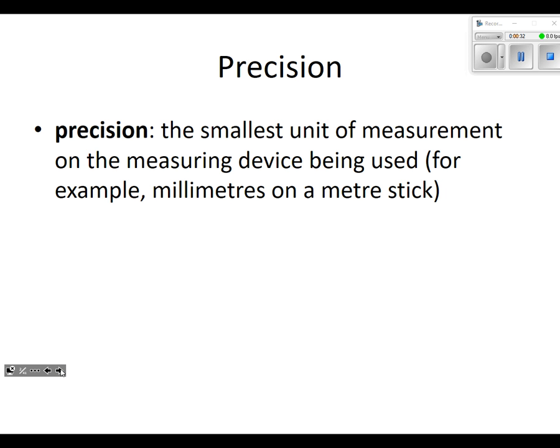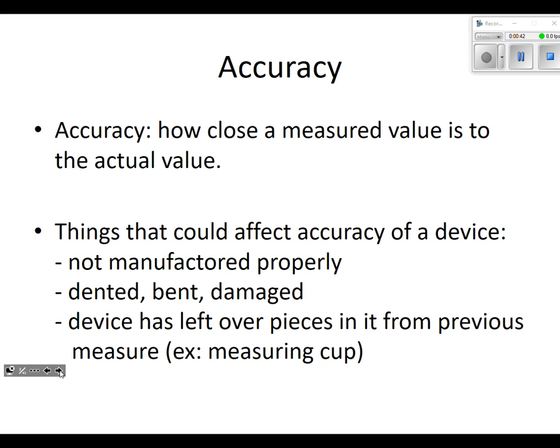Remember we talked about precision. Precision is the smallest unit of measurement on the measuring device being used. For example, it might be millimeters on a meter stick. Accuracy is how close a measured value is to the actual value. How do we know the actual value? We never know it. Things that could affect it: the device is not manufactured properly, maybe it's damaged, maybe it's got leftover pieces in a measuring cup.